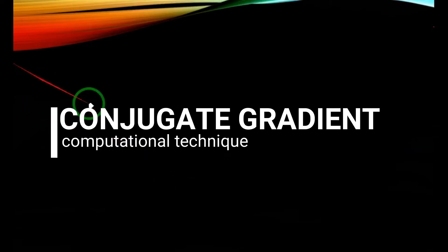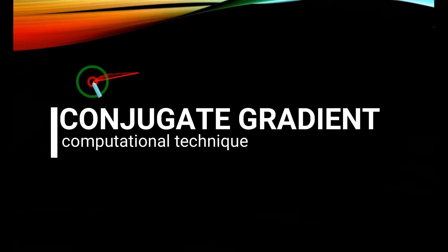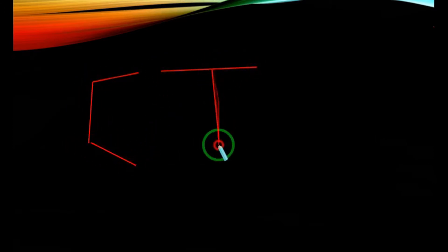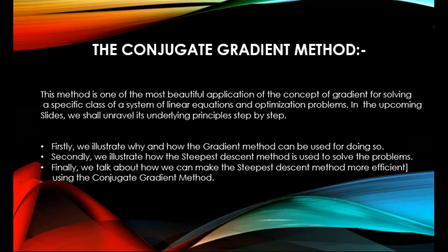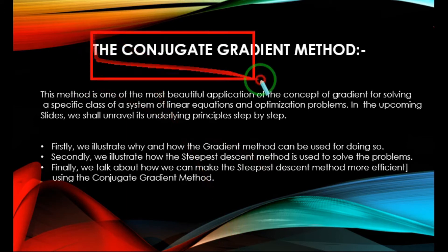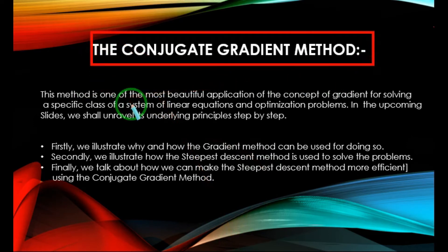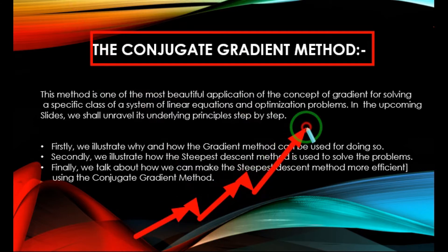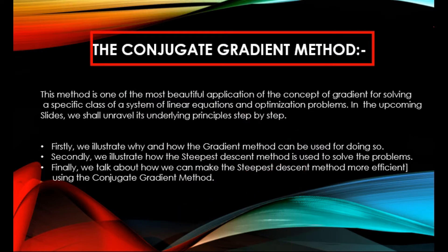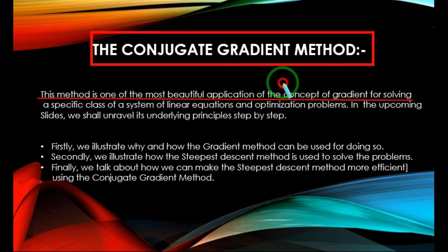Hello, Namaste and welcome to this video series where we'll be focusing on the various underlying concepts of different methods used under the computational technique and demonstrate their applications by practicing some numerical problems. Today we will be looking at the conjugate gradient method, which is one of the iterative methods with a high rate of convergence. This basically means that this method converges or approaches the solution at a faster rate, using a fewer number of steps. This method is one of the most beautiful applications of the concept of gradient for solving a specific class of system of linear equations and optimization problems.